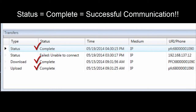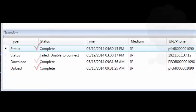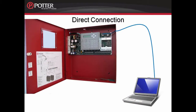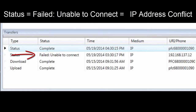In order to have successful communication between the fire alarm control panel and the computer when direct connected, the IP address on the panel and the computer need to be similar. For example, if the IP address of the panel is 169.254.150.70, then the computer needs a similar IP address but not the same — for example, 169.254.150.75. When communicating with the fire alarm control panel from a laptop computer with a direct connect, the common error you'll see when the IP addresses are not similar is "Failed - Unable to Connect," seen in the transfers window under status.